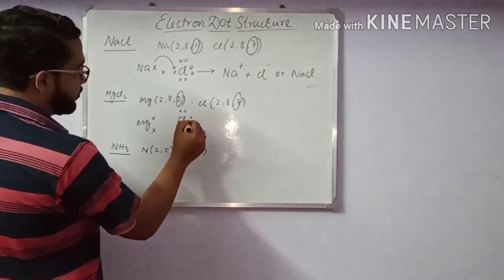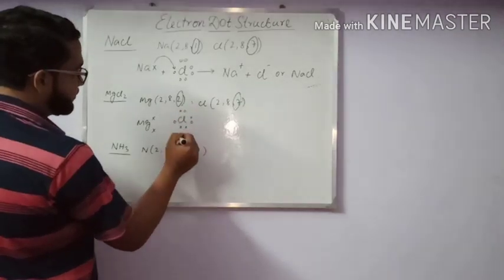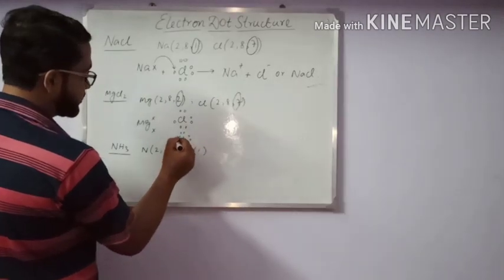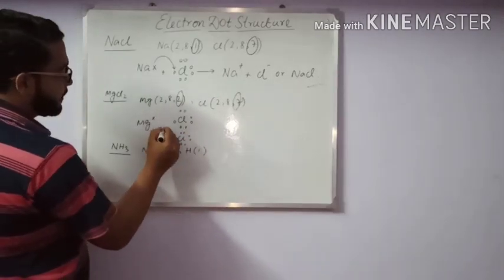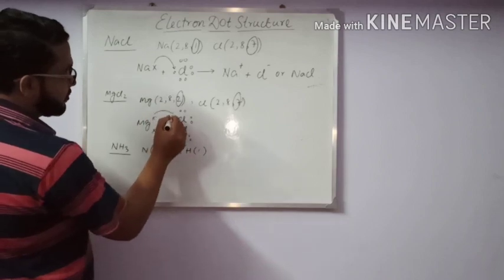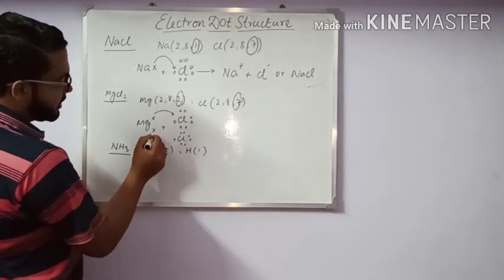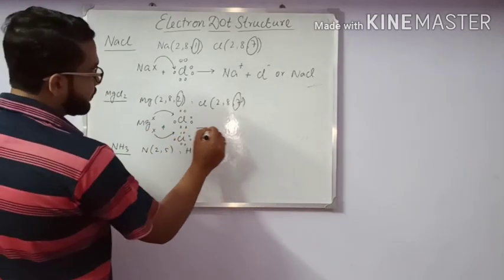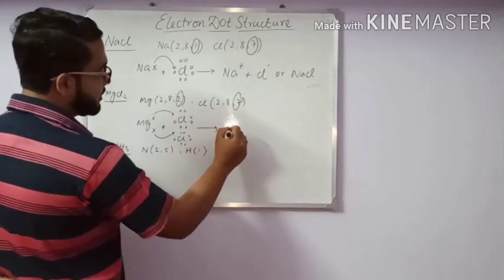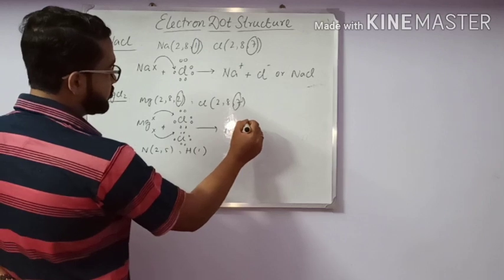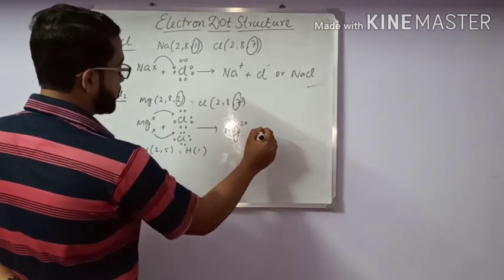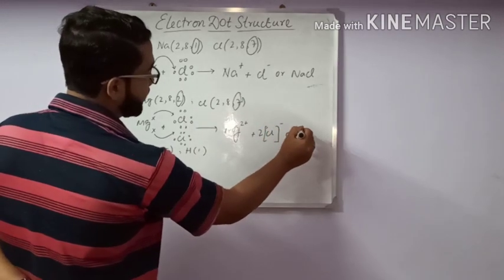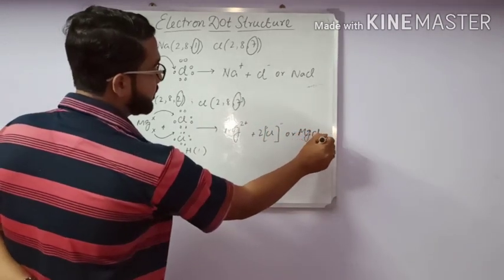So 1, 2, 3, 4, 5, 6, 7, and here also 1 chlorine atom: 1, 2, 3, 4, 5, 6, 7. Now this electron goes here and this also goes here for sharing, and we can write Mg2+ + 2Cl- or we can write MgCl2.